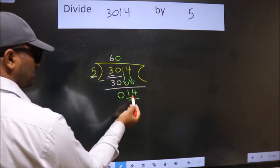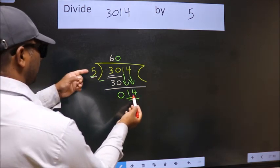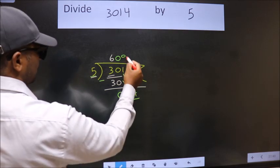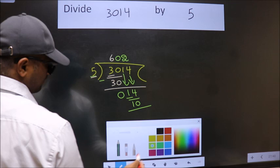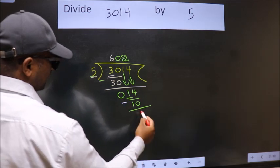So, 14. A number close to 14 in 5 table is 5 times 2 is 10. Now we subtract. We get 4.